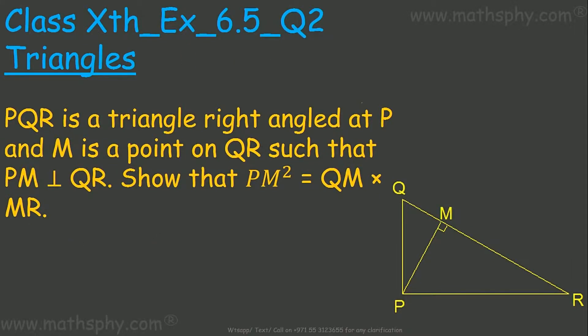So this question here says PQR is a triangle right-angled at P. PQR is a right triangle, right-angled at point P, and M is the point on QR such that PM is perpendicular to QR. This angle here and this angle here both are 90 degrees. Show that PM square is equal to QM into MR.